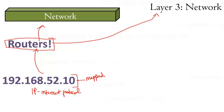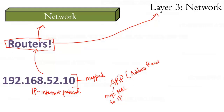The protocol that does this mapping is called ARP — Address Resolution Protocol. What ARP does is map MAC addresses to IP addresses. ARP actually operates slightly on both the network layer and the data link layer, because it deals with both MAC addresses and IP addresses.